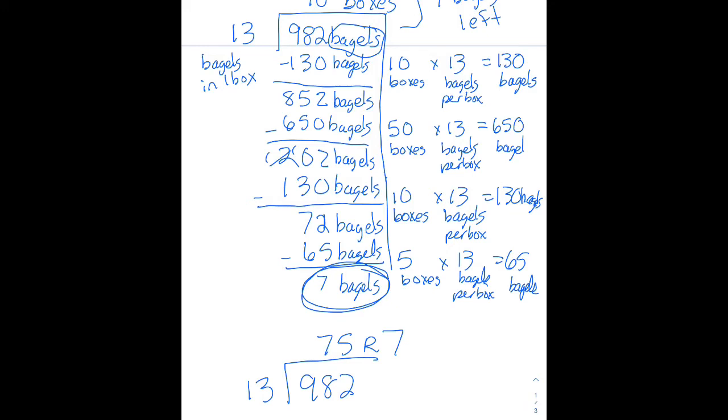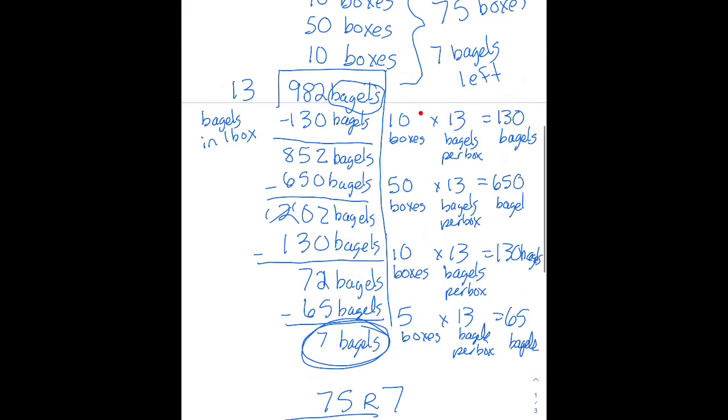So this is a nice algorithm, like I said, because if I had done the standard long division algorithm, I would have said 13 goes into 98, and then I would have had to figure out how many times, and it might have taken some trial and error to come up with 7. Whereas here, I could just pick numbers that I was comfortable with, and every number that I chose advanced me towards my total. So there were no wasted guesses.